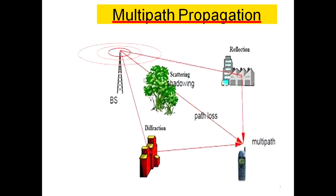Depending upon these modifications in the incoming signal, the captured signal in multipath propagation will arrive at different times, which introduces path loss.